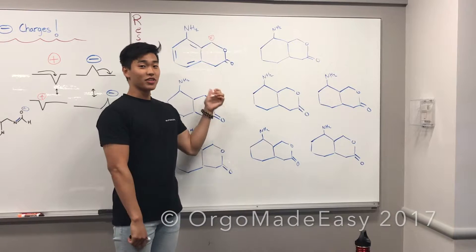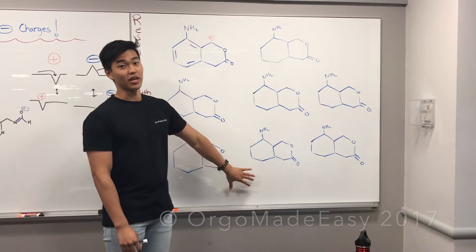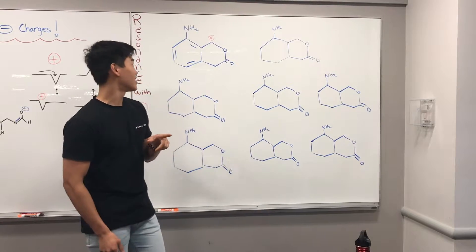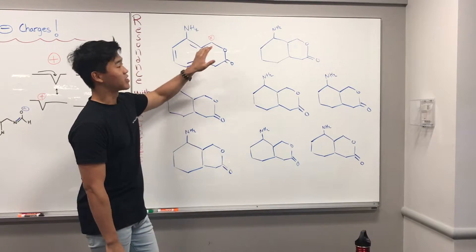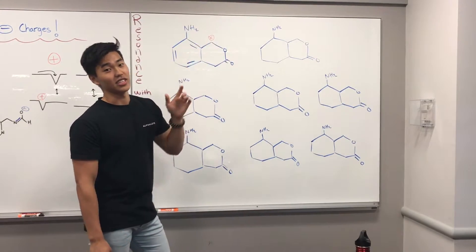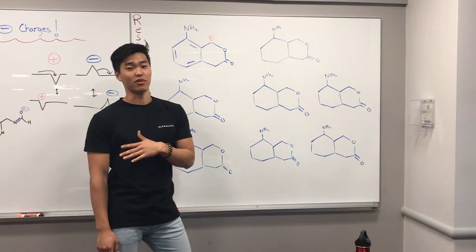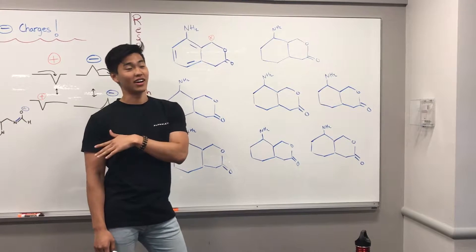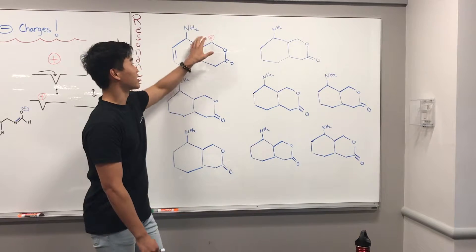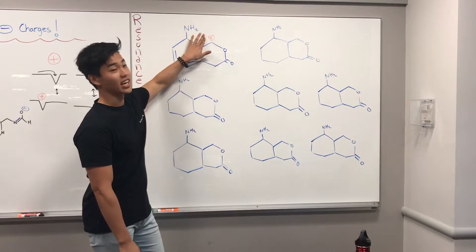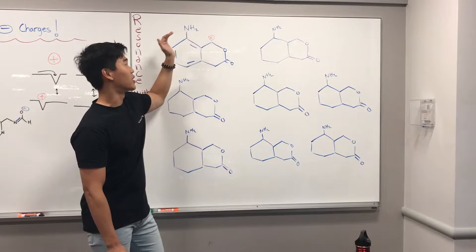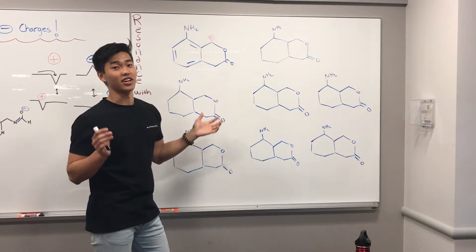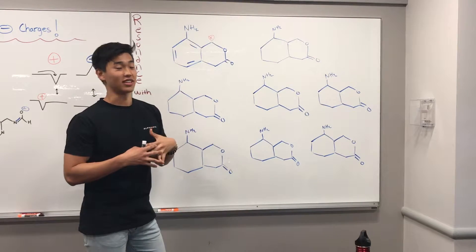Alright, so hopefully you got all the answers. There are 7 possible resonance structures and we'll go over them right now. If you haven't seen Part 1, go check it out — Frank goes over an analogy with a positive charge, where you want to think of it as a well where all the other charges want to fill.